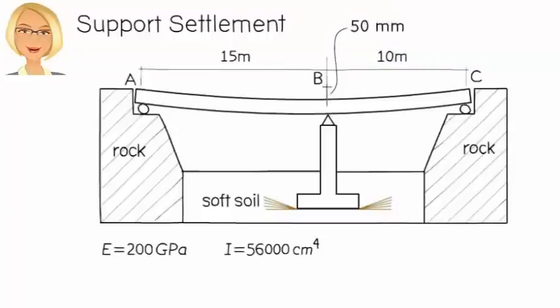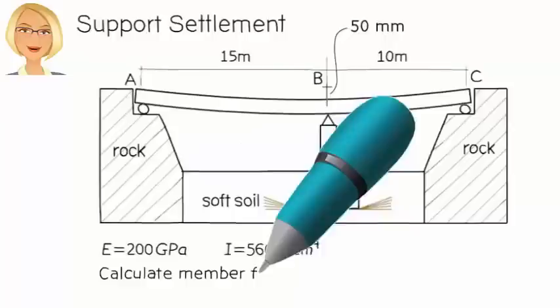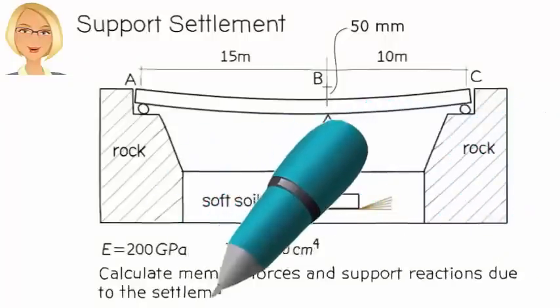We wish to determine the effect of this displacement on the beam. More specifically, we want to compute member forces and support reactions caused by the support settlement. Once these forces are computed, we can then assess the impact of the settlement on the overall health of the bridge.